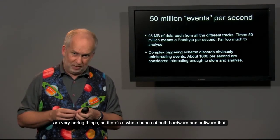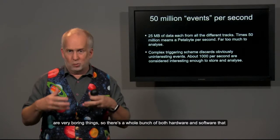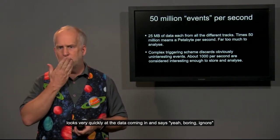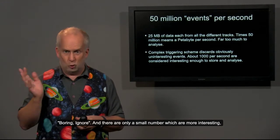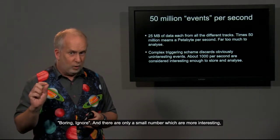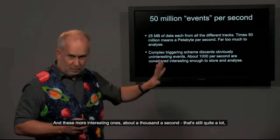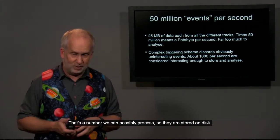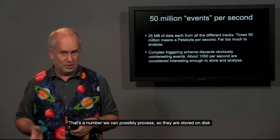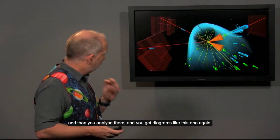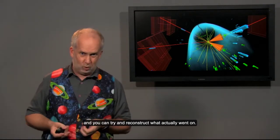Most of these collisions are very boring things, so there's a whole bunch of both hardware and software that looks very quickly at the data coming in and says, boring, ignore, boring, ignore. And there are only a small number which are more interesting, and these more interesting ones, about a thousand a second, that's still quite a lot, but that's a number we can possibly process. And so they are stored on disk, and then you analyze them, and you get diagrams like this one again, and from it you can try and reconstruct what actually went on.